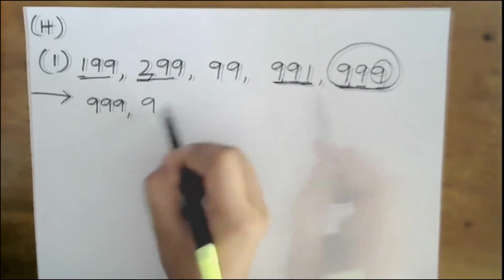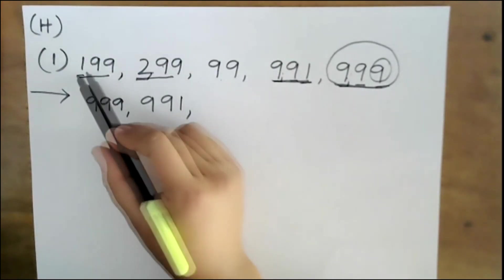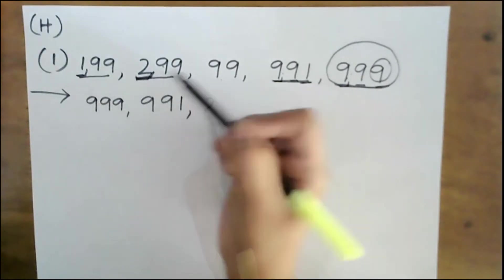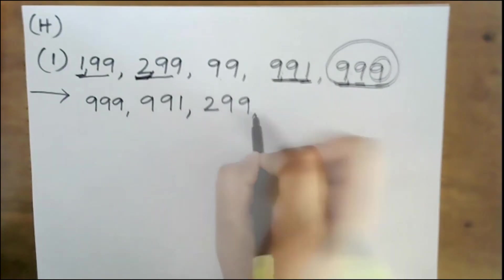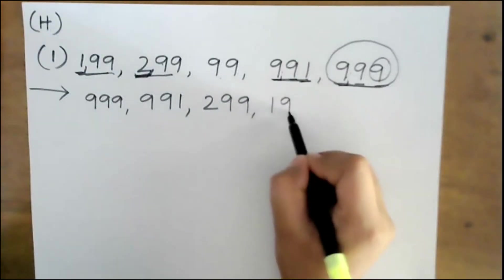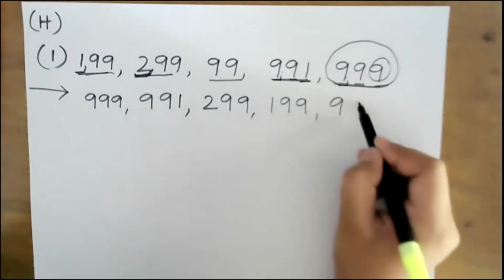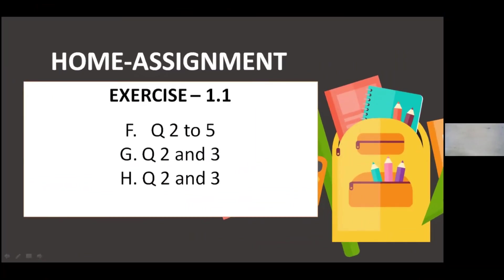Next is 991. And from the remaining two, the hundreds digit here is 1 and here is 2, so 299 is bigger — write 299 next, then 199, and the last is 91.